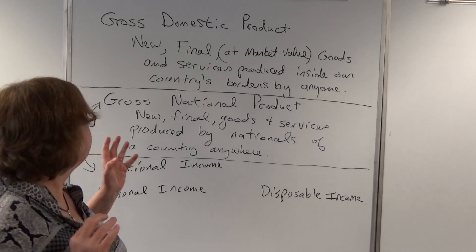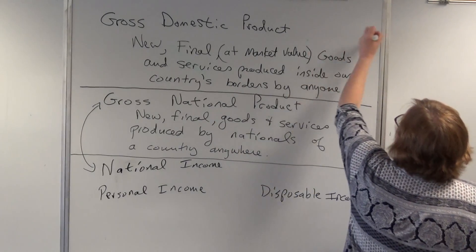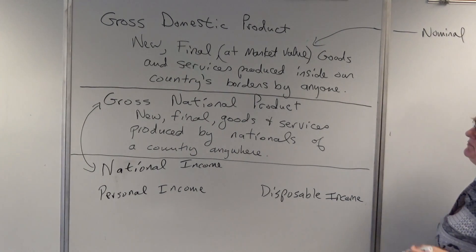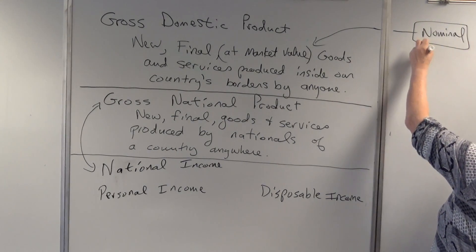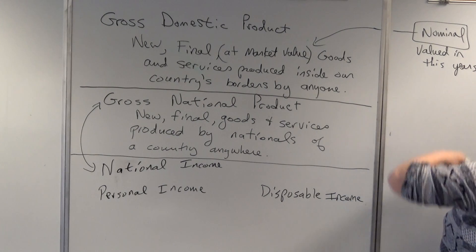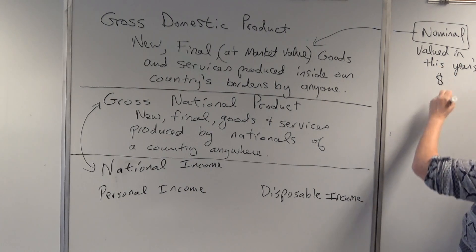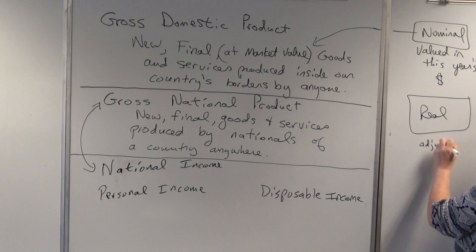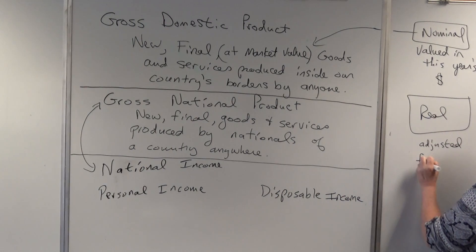GDP is at market value — a term we can unpack shortly. In the next chapter we'll learn how to switch between real and nominal. Nominal means valued in this year's dollars — or whichever particular year is being mentioned. Real is adjusted for inflation, though that's not the most precise definition. Basically, to get real GDP we change the dollars to a base year.